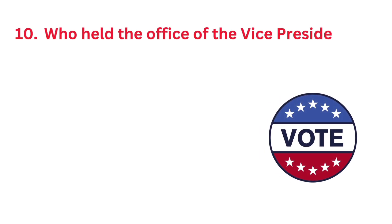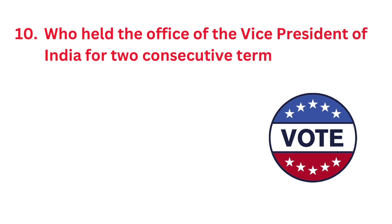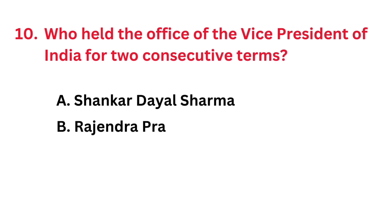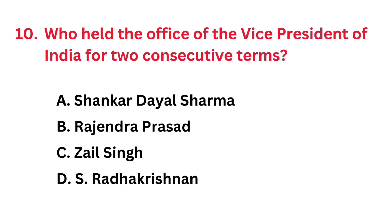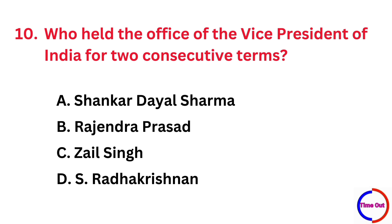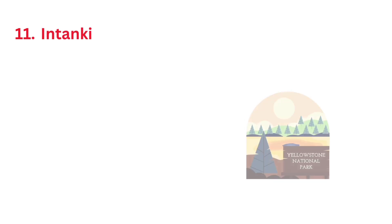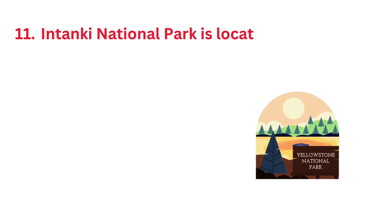Who held the office of the Vice President of India for two consecutive terms? The correct answer is option D: S. Radhakrishnan.